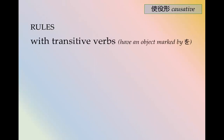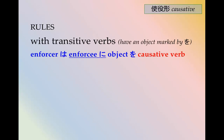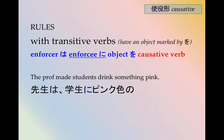The rules depend on what you're trying to say. With transitive verbs, they have an object marked by O. The pattern is: enforcer は, enforcee に, object を, causative verb. For example: The professor made students drink something pink — 先生は学生にピンク色の飲み物を飲ませました。 Made them drink a pink drink.